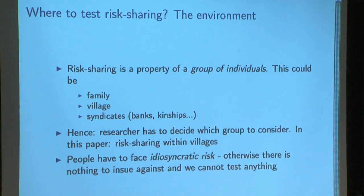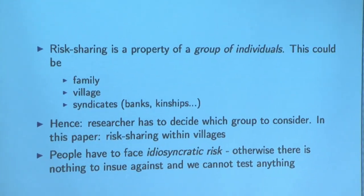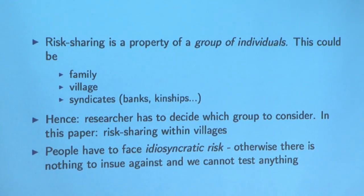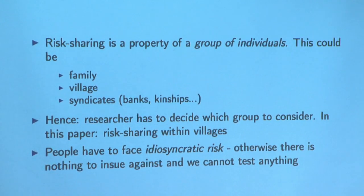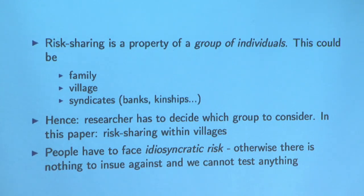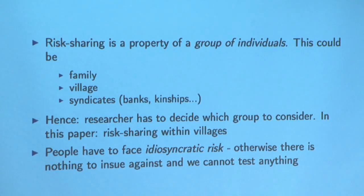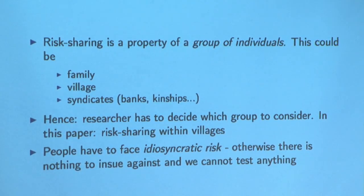Where to test? We're going to do these tests at the village level, but we'll move. This could be kinship networks within a village, family-related people. It could be bigger than that — across-village risk sharing. It could be that being a member of a financial institution is allowing you to be part of a larger risk-pooling population. It's a judgment call about where to apply it.